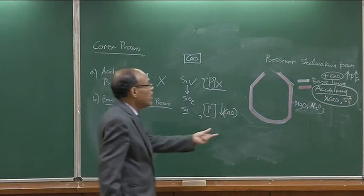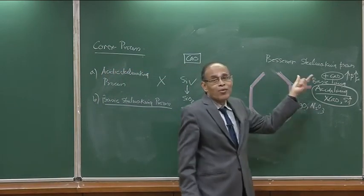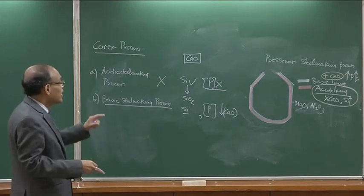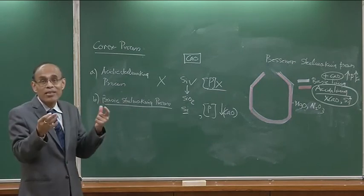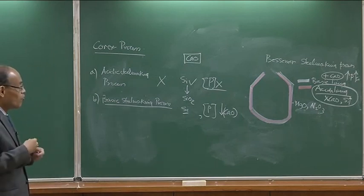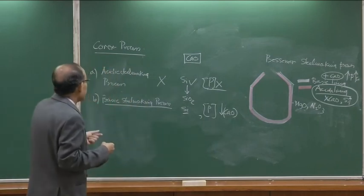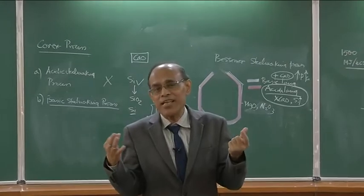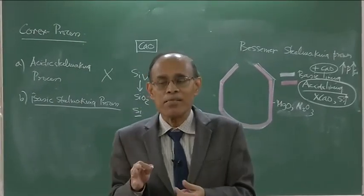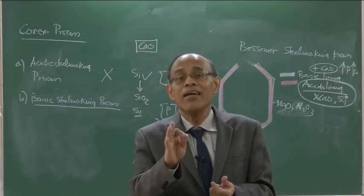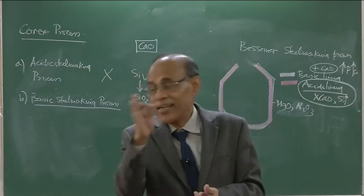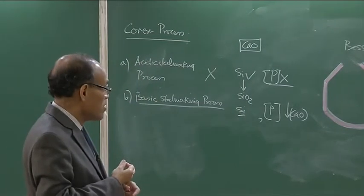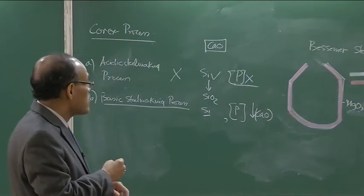The original Bessemer process was an acidic steel making process: low-phosphorus pig iron was used, air was bubbled through it, and carbon and silicon were removed to produce steel. Modern steel making has evolved significantly since 1850–1860. In this course we will study these developments after understanding the thermodynamics and kinetics of steel making, with some coverage of reactor design but focusing primarily on the underlying physicochemical phenomena.